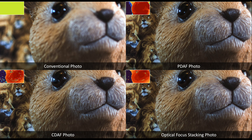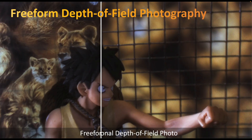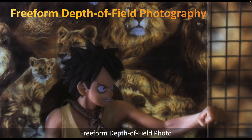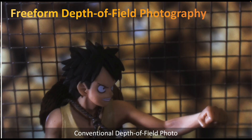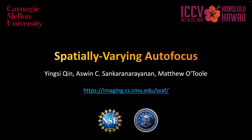An additional feature of our technique is to produce a free-form depth of field that can remove thin structures. For example, in this scene, we can remove the wire mesh by intentionally focusing the wire mesh regions on a background so that they become defocused and nearly invisible. Please visit our website for more information. Thank you!